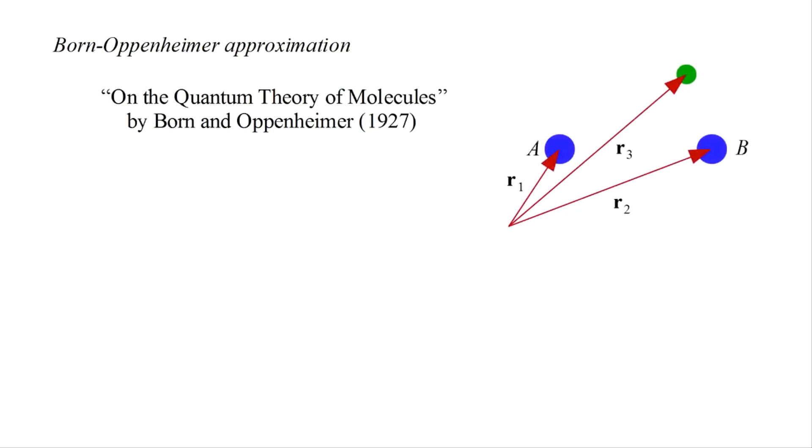Even for the simplest molecule, the full Schrödinger equation is analytically intractable. Central to quantum chemistry calculations is the Born-Oppenheimer approximation. This was presented in 1927 in a paper titled On the Quantum Theory of Molecules. The hydrogen molecule ion has three particles, protons A and B, and the electron. Let's label their positions as R1, R2, and R3. Rigorously, the wave function should be a function of all three positions. Its squared magnitude would give the probability that proton A is at position R1, proton B is at position R2, and the electron is at position R3. This is too complicated a problem to solve directly.